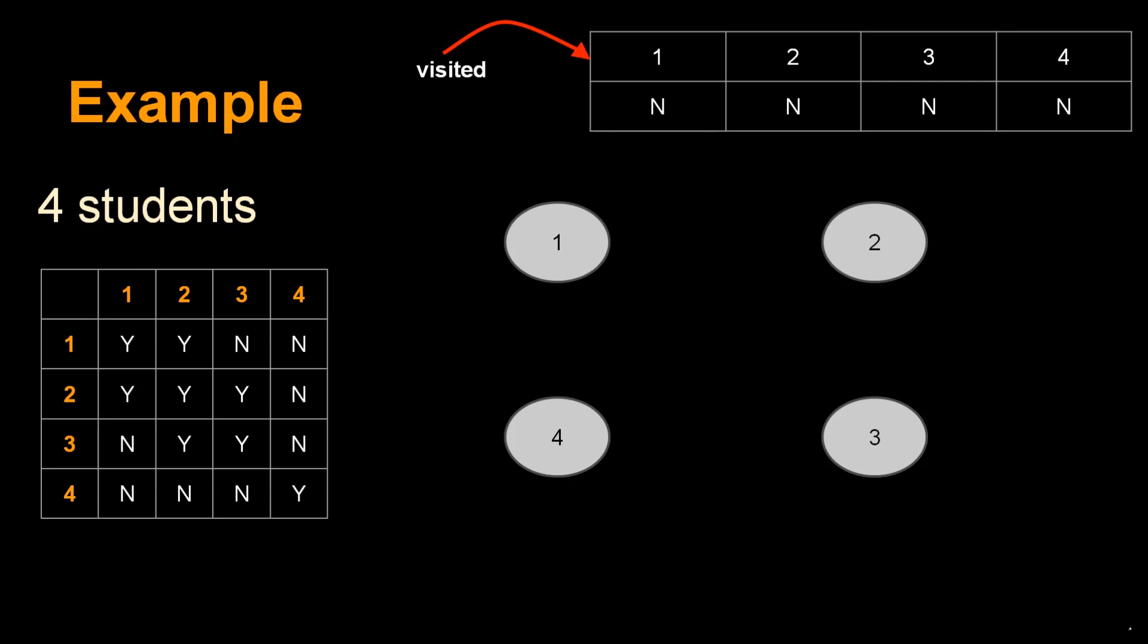Let's start with student 1 and find their friend circle. First, define a visited array where visited[i]=Y means the student has been seen in a friend circle. Initialize all values of the visited array as N, meaning no students have been added to any friend circle yet.